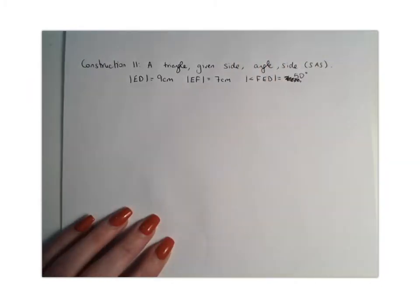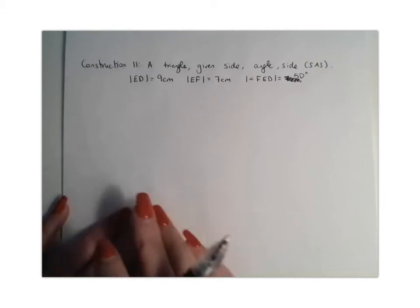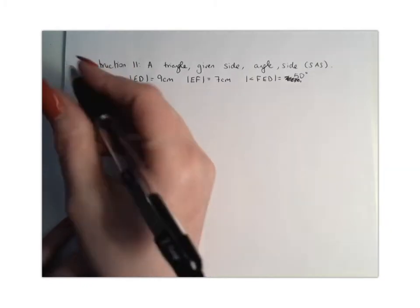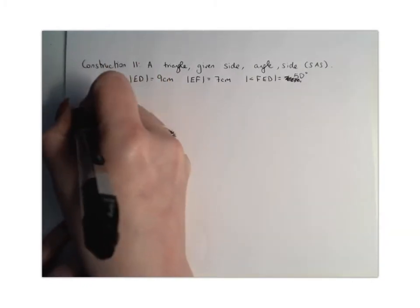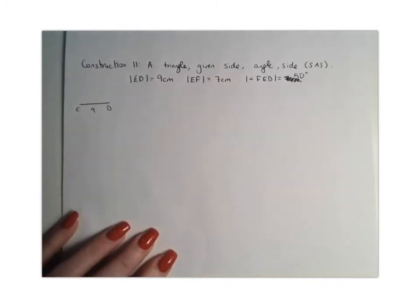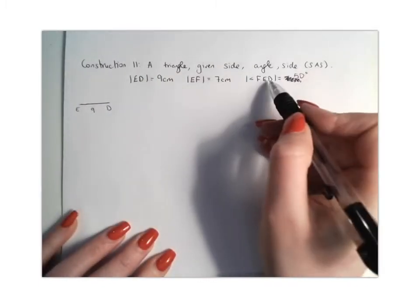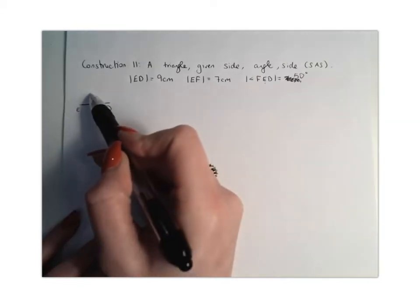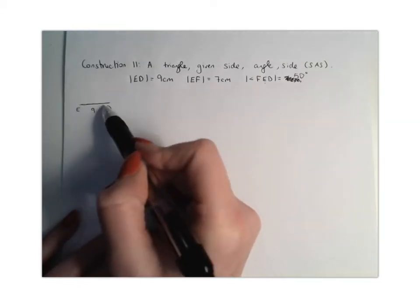Just like in our previous construction, construction 10, we always draw ourselves a rough sketch to begin with. I'm going to use my longest side to be my base length, so it's going to be ED at 9cm, and I'm going to go to my angle next. My angle is angle FED, so basically F is going to be up here somewhere, come down to E and out to D.